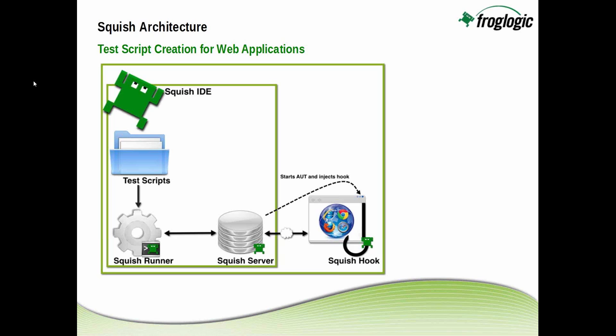Let's take a bird's eye view of the Squish IDE, which we'll be primarily focusing on today. The Squish IDE is where you generate your test scripts, whether using recording, scripting, or a combination of the two. The IDE works with the Squish runner and Squish server to connect to or inject a hook in your application under test — your browser in this case — to either send commands or retrieve information about that application. This can be done locally within one environment or distributed across multiple environments.